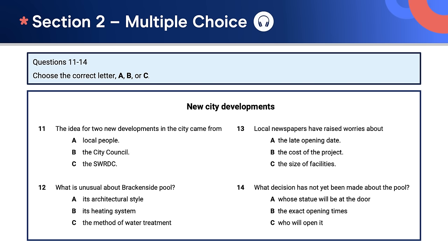How did you go? I'll now show you the answers for section three. They are: 21 B, 22 C, 23 D, 24 E, 25 A, 26 C, 27 C, 28 A, 29 B, 30 A.